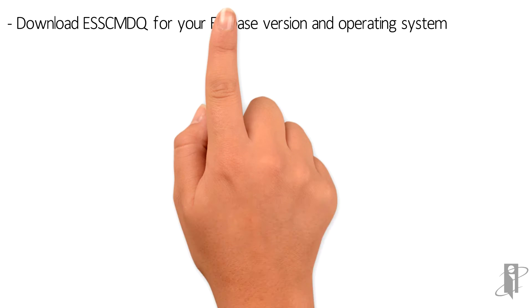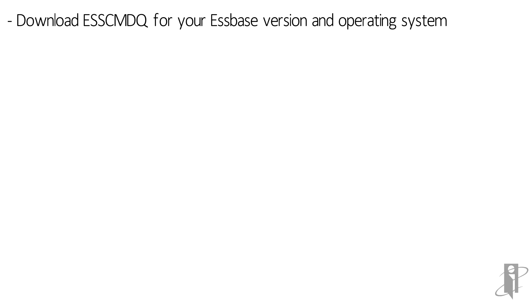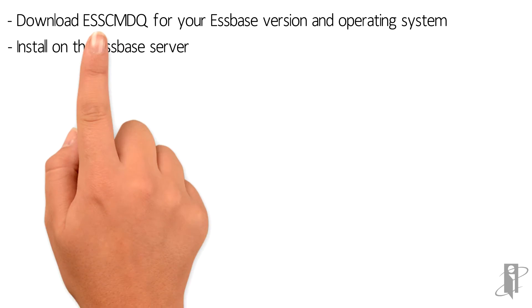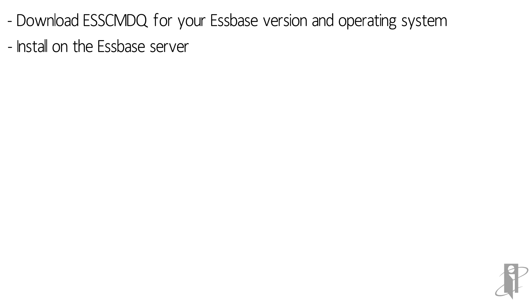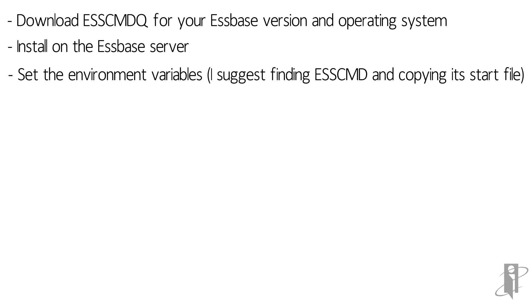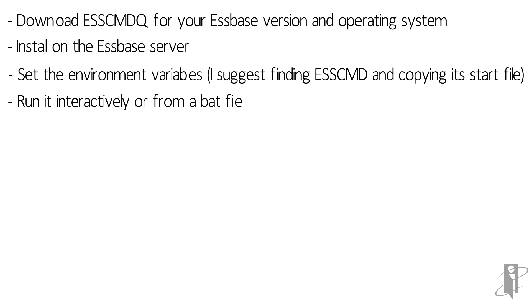What are the steps for really doing this? Download S-Command-Q for your version and operating system. Install it on the server. You have to set the environment variables. What I typically suggest is finding where S-Command is, copying that start S-Command file, creating a start S-Command-Q file, editing it, and just changing S-Command in there to S-Command-Q. To test it, you can run it interactively or run it from a batch file.